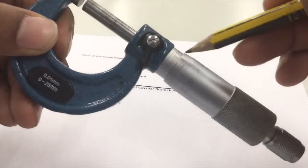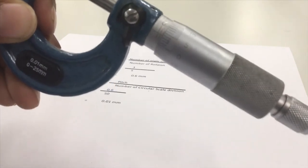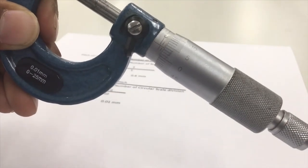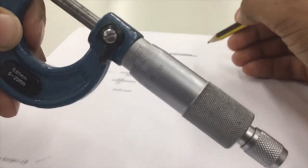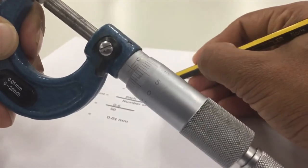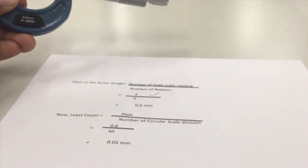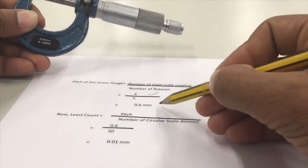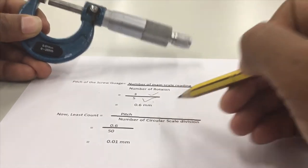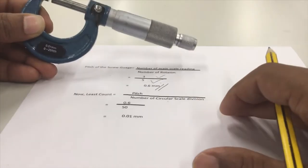three readings. So main scale has three readings, which you can see here. And how many rotations I did? I did five rotations. So three by five, which is 0.6 millimeter.